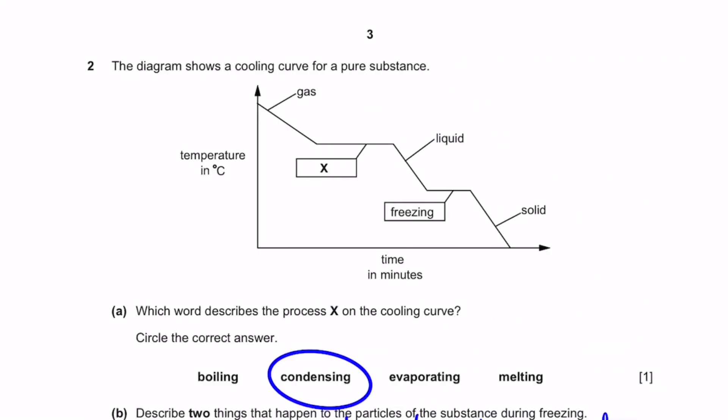Question 2. The diagram shows a cooling curve for pure substance. Which word describes process X on the cooling curve? Circle the correct answer. The answer is condensing because the gas is becoming liquid. This is condensing.